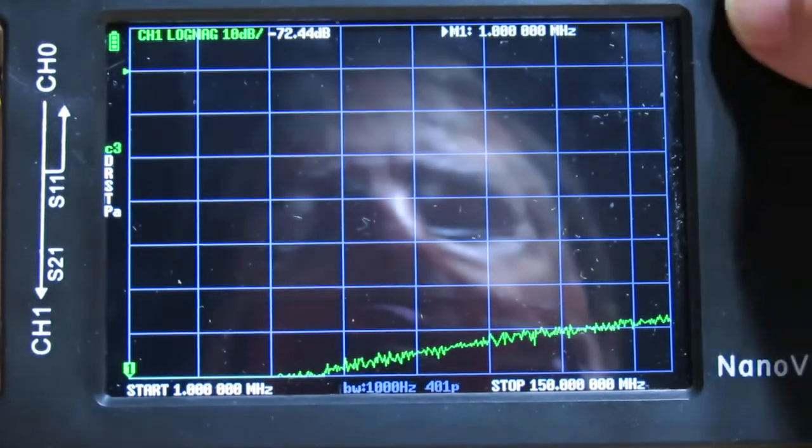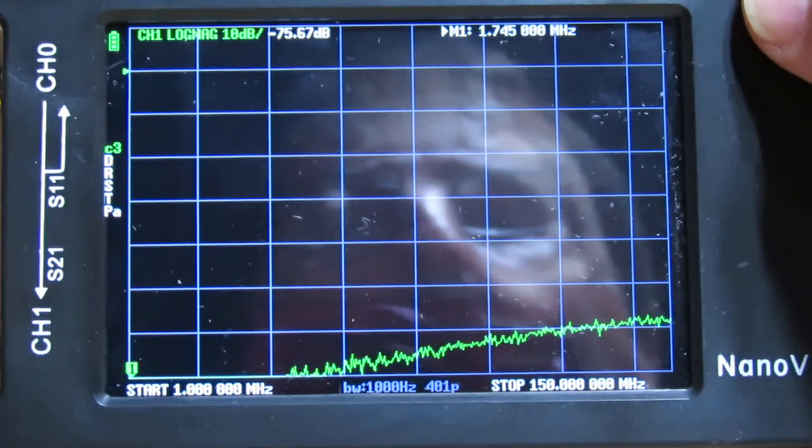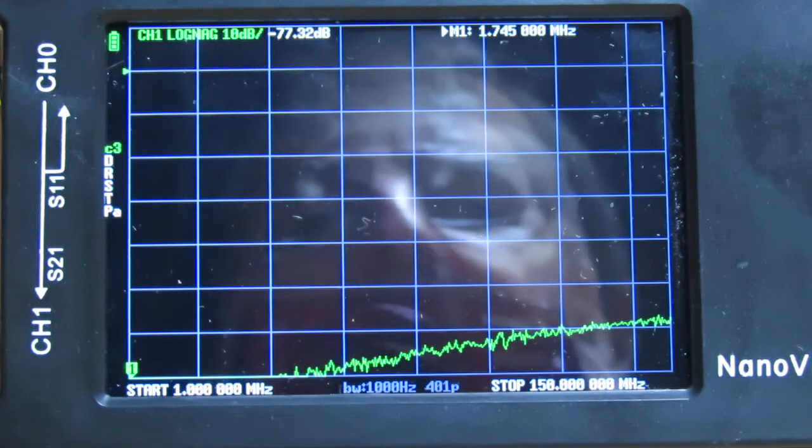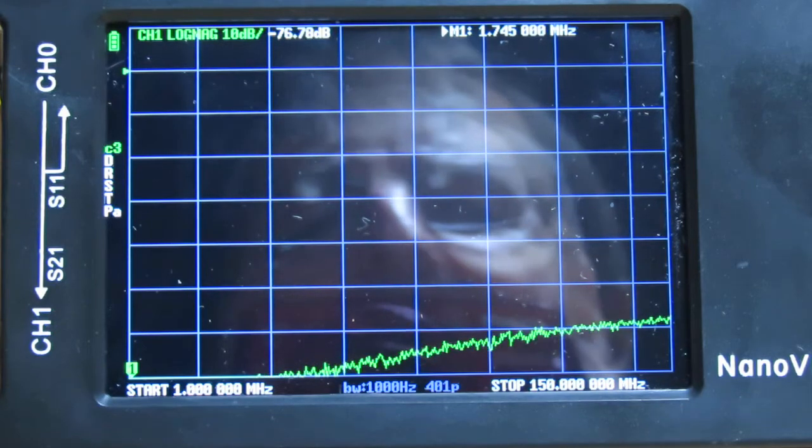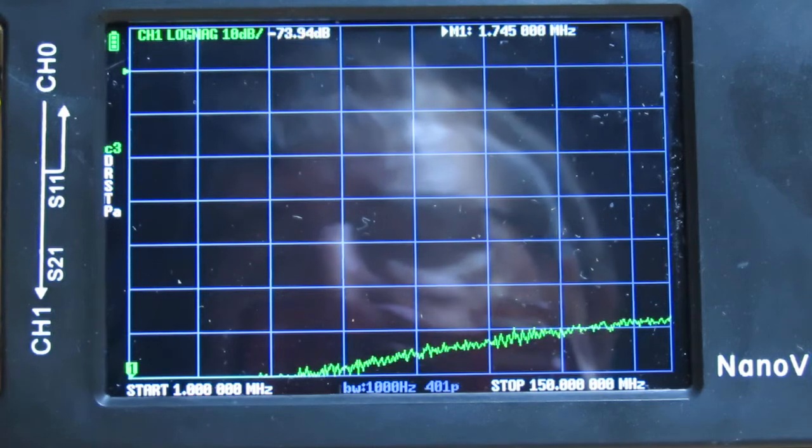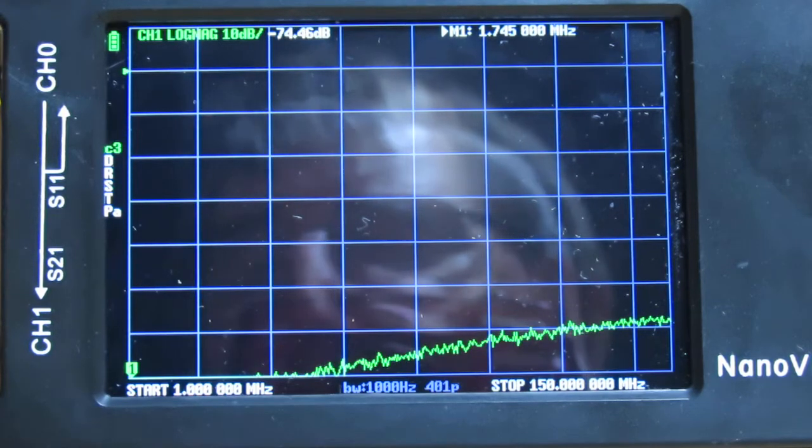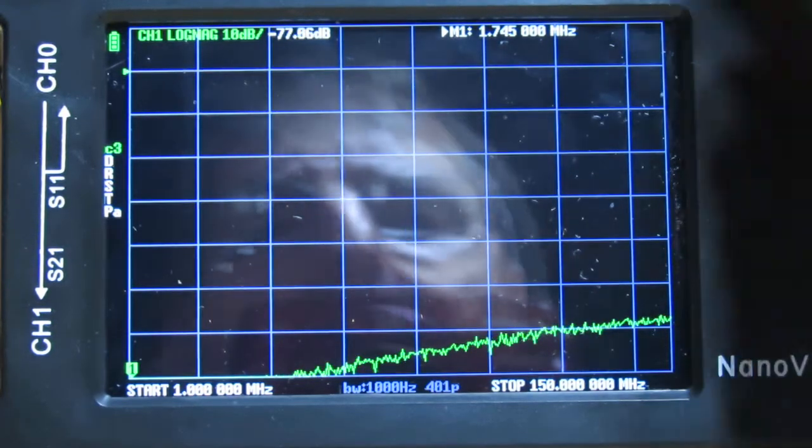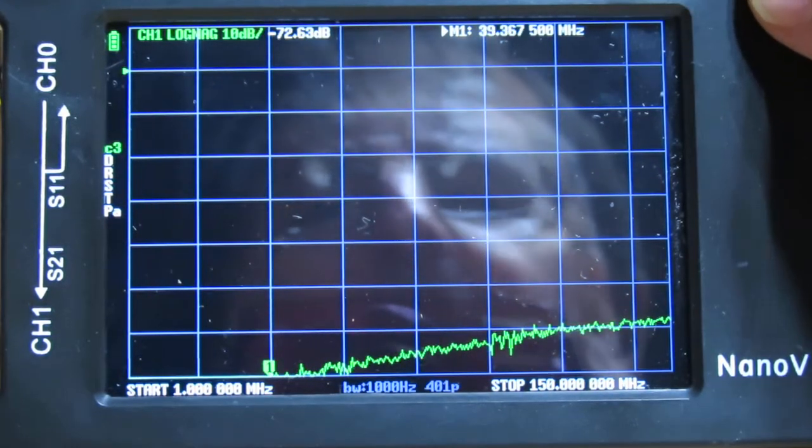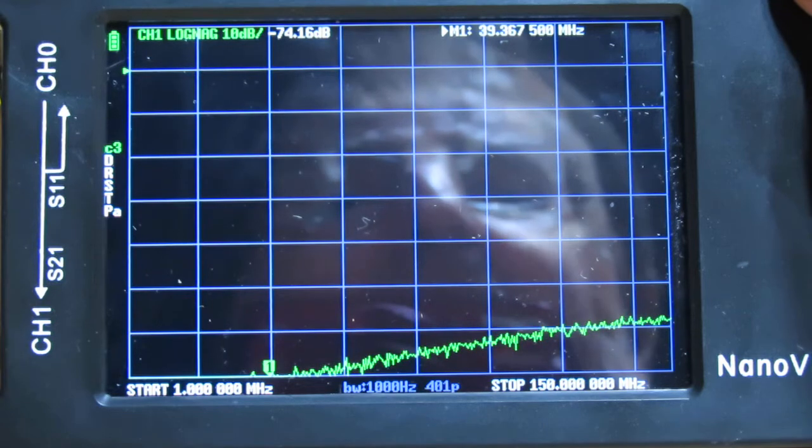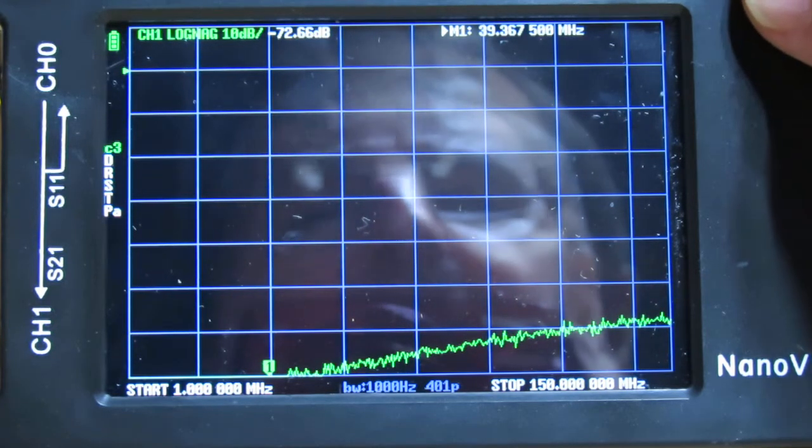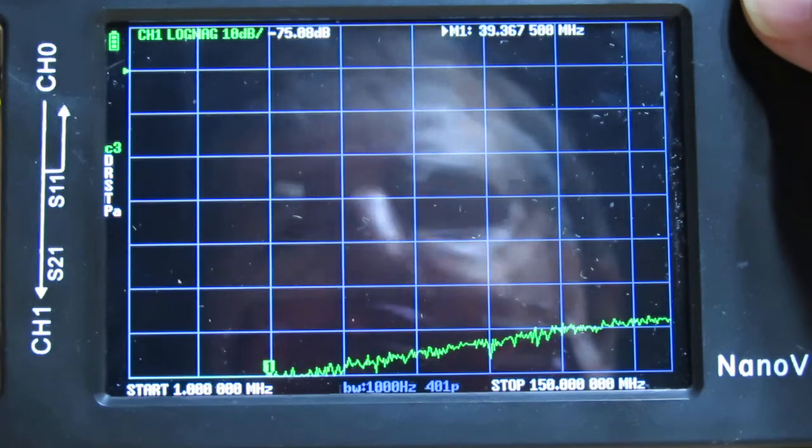So at 160 meters, the attenuation is down 75 dB. Well, we know we can use this switch, 1500 watts going into one and not affect the radio on the other side. Now let's start going up a bit. We're still at 39 megahertz, still down 72 dB. This is good, so on HF we can use it.